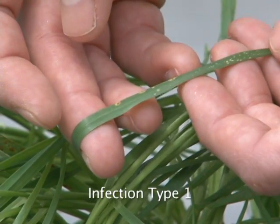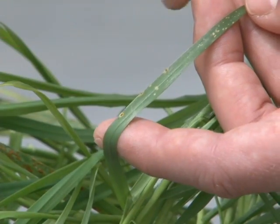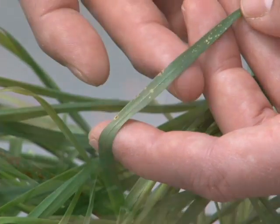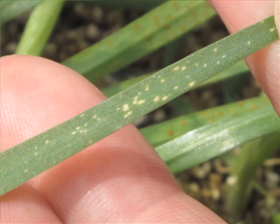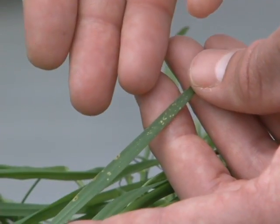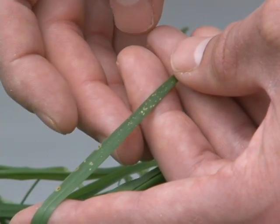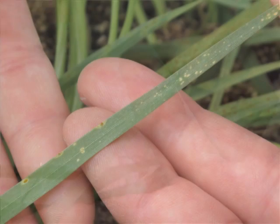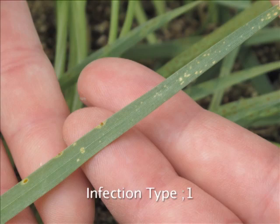For SR38, there are more infection types than just one on the same leaf. You can see these yellow spots, which are spots of chlorosis. We call this a fleck infection type. Fleck infection types are in between a one and a zero — the rust has begun to infect the plant, but the plant has killed all the cells in the vicinity of the infection. So for SR38, we call the overall infection type a fleck-one infection type.